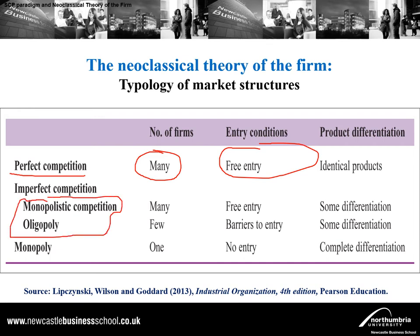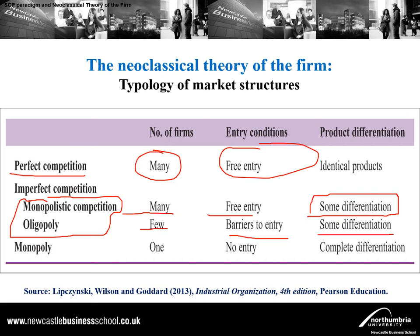There are two subcategories between the extremes. Under monopolistic competition, there are many firms and free entry, but there is some product differentiation. Under oligopoly, there are few firms, barriers to entry, and some differentiation. Finally, a monopoly has one firm, entry is not possible because entry barriers are so high, and it produces a very different product from what else is out there in the market.